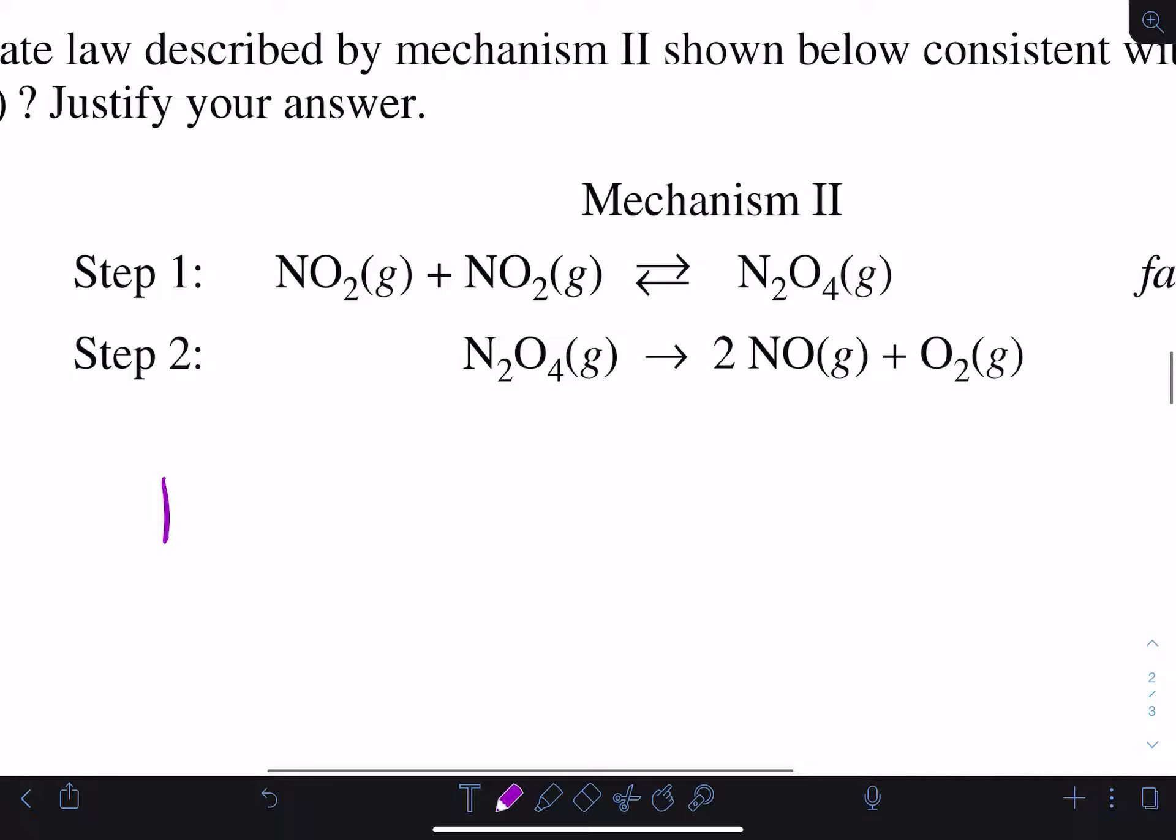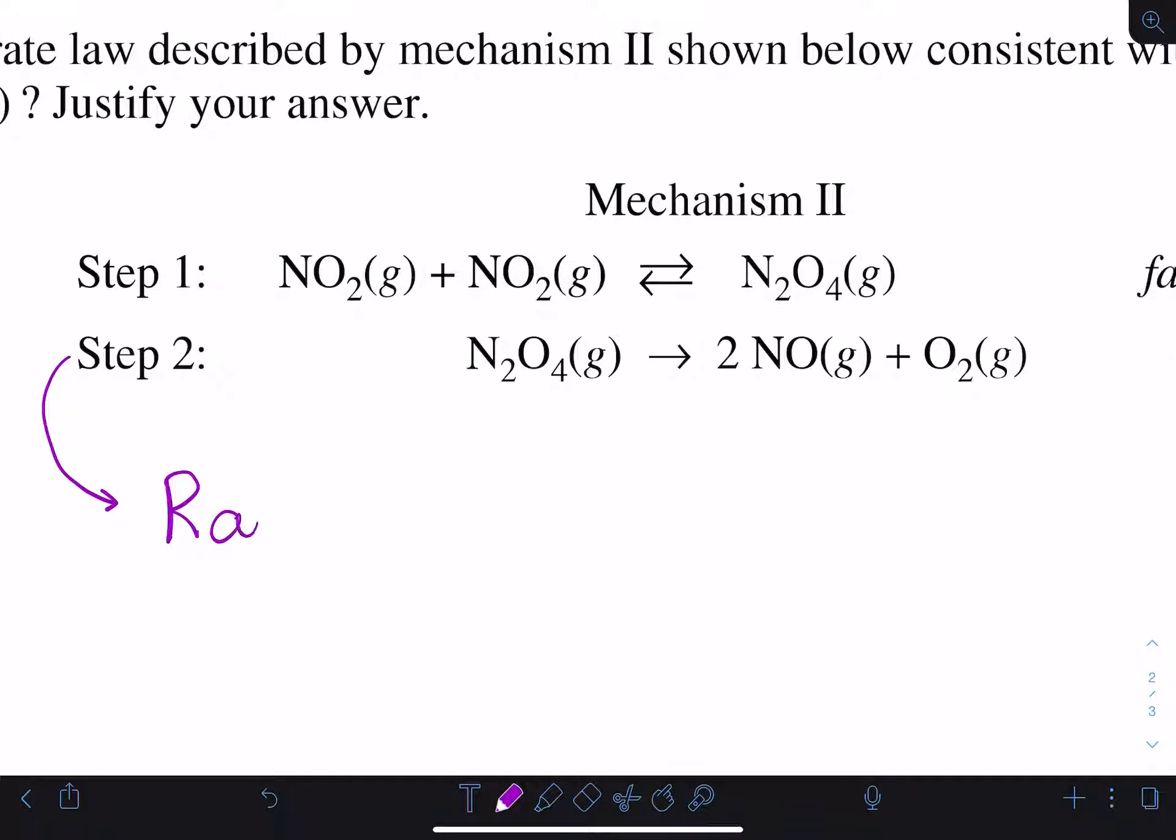For this one we want to write the rate law for step 2, which is the rate for step 2 equals the rate constant for step 2 times the concentration of N2O4. But N2O4 is an intermediate, which means we need to replace this.